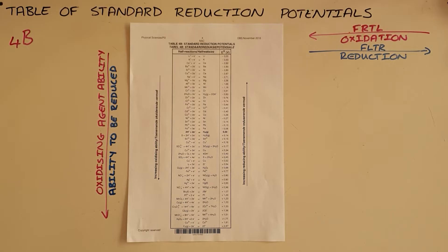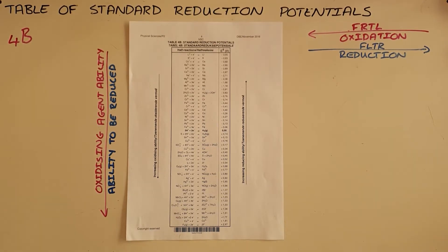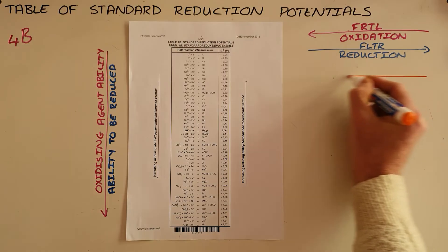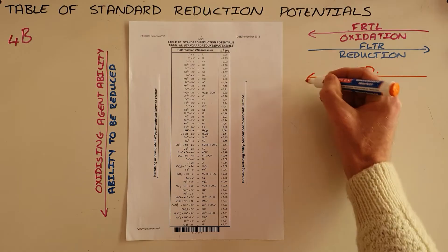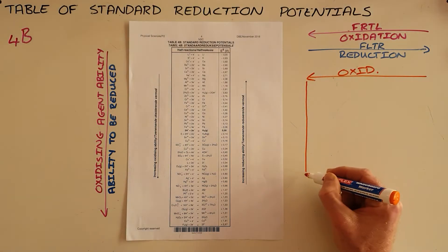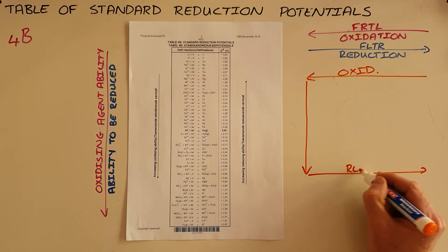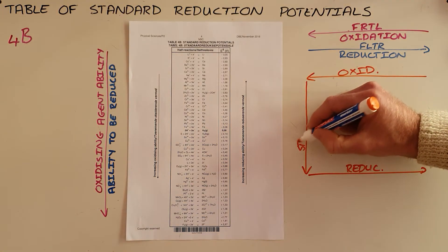This table can be used to determine whether or not a reaction is spontaneous. Once you know which substance is being oxidized and which is being reduced, if they follow this general pattern where you have oxidation occurring and then are required to move down the table before arriving at the reduction half reaction, that will always be a spontaneous reaction.